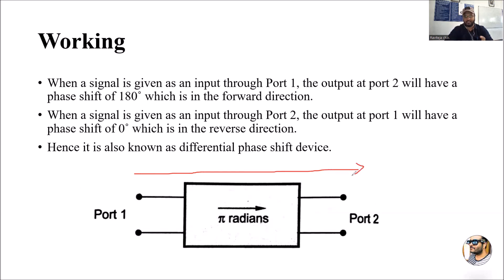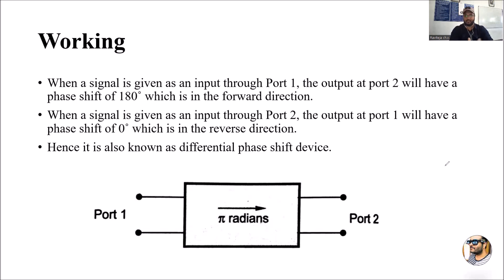In the forward direction, whenever a signal is given as input through port 1 and taken as output from port 2, it experiences a phase shift of 180 degrees. Therefore, this particular gyrator is also known as a differential phase shift device. This is the basic working and basic concept of a gyrator. Thank you.